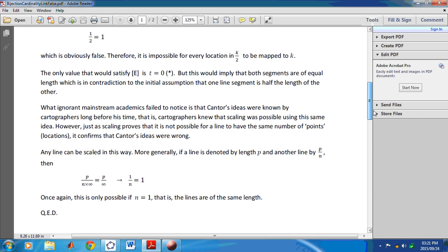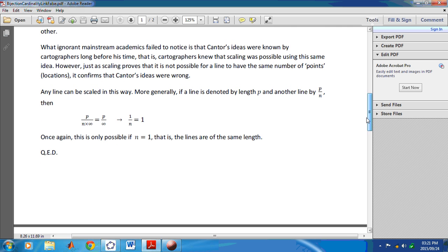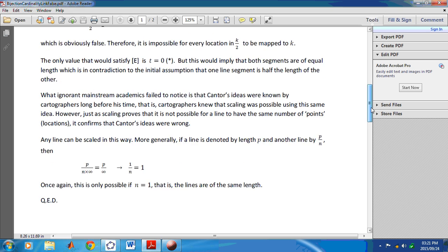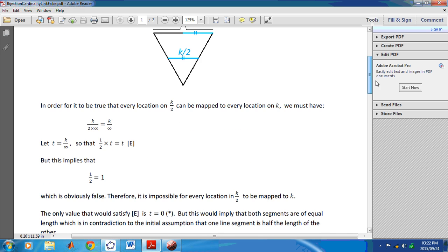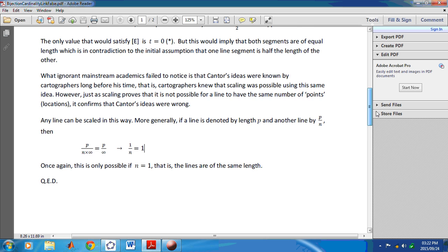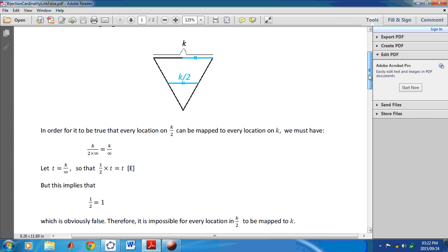So what ignorant mainstream academics fail to notice is that Cantor's ideas were known by cartographers long before his time. That is, cartographers knew that scaling was possible using the same idea. And so any line can be scaled in this way. More generally, if a line is denoted by length p, and another line by p over n, then this identity implies that 1 over n is equal to 1. And once again, this is only possible if n is equal to 1. That is, if the lines are of the same length. That is the only time we can say that a bijection exists between each line, between the points of each line. Otherwise, we can say nothing about the number of points on each line, or the correspondence between the points on one line and the other line.